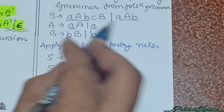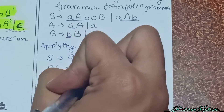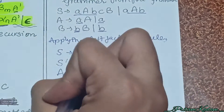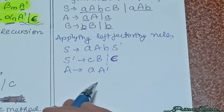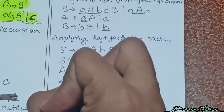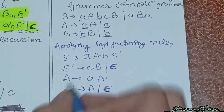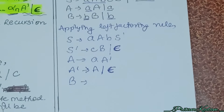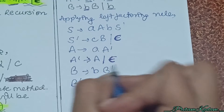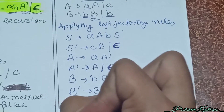S' contains cB and epsilon since the second production has nothing remaining. For A's production, we have small a common, so I write a then A', and A' contains capital A and epsilon. For B's production, we have small b common, so I write small b then B', and B' contains capital B and epsilon.